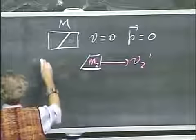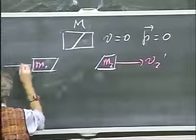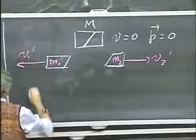This is M2. And another piece flies off in this direction with mass M1 with velocity V1 prime.